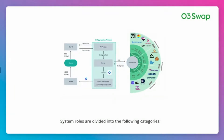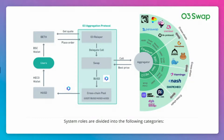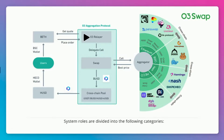System roles are divided into the following categories. One: users connect to O3 Swap for transacting with their crypto wallet. Two: the O3 relayer acts as the agent between the user and the contract on the chain. Depending on the user's needs, the O3 relayer can find the best exchange rate through O3 Swap.